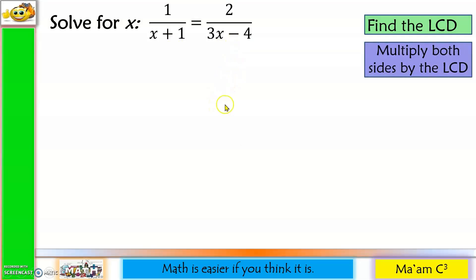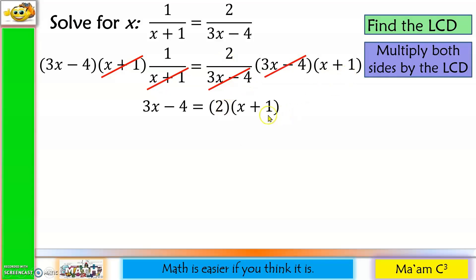Step 2, let us multiply both sides by the LCD. Now, remember that our LCD is in the numerator. The denominator of that is the invisible one. So if we have x plus 1 in the numerator and x plus 1 in the denominator, this will be cancelled out, leaving us with 3x minus 4 times 1. On this side, 3x minus 4 on the numerator and 3x minus 4 in the denominator will be cancelled out, leaving us with 2 times x plus 1.